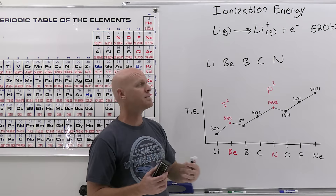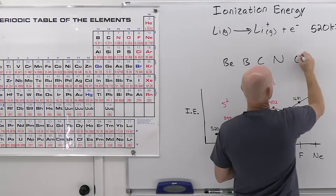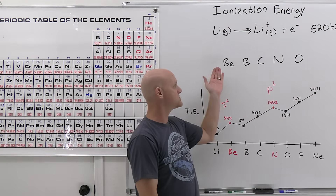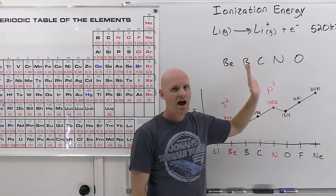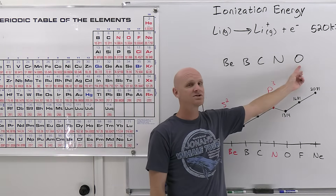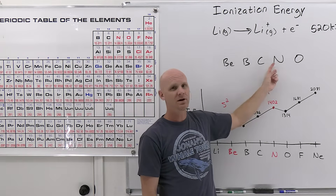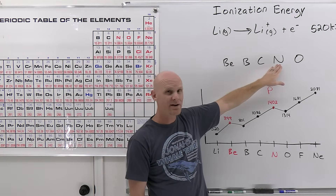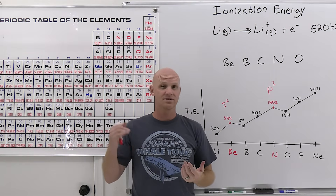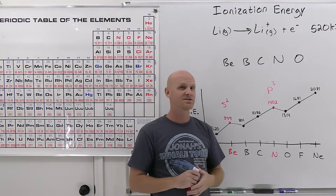Now let's test the exception directly. Take beryllium, boron, carbon, nitrogen, and oxygen — which has the highest first ionization energy? Oxygen is furthest right, but nitrogen beats oxygen because of its half-filled P subshell. The correct answer is nitrogen. Both the general trend and the exceptions are fair game on your exam.